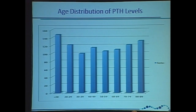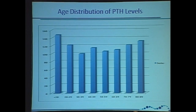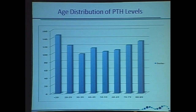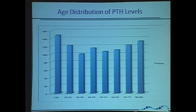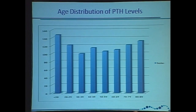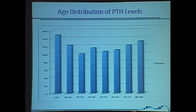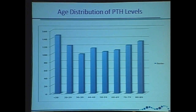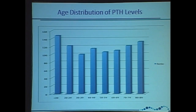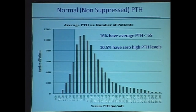We tend to see patients — your typical parathyroid patient, your 59-year-old female — she's right in here. She's got a PTH of 100 on average. Normal, non-suppressed PTH.